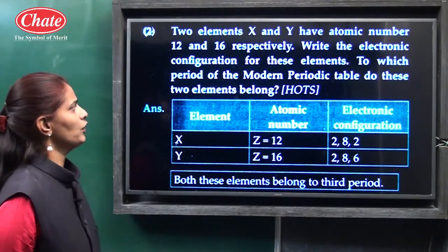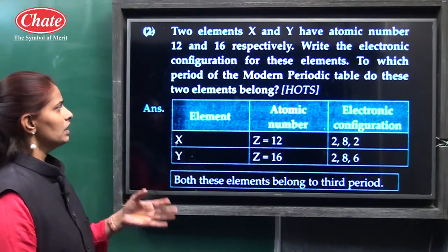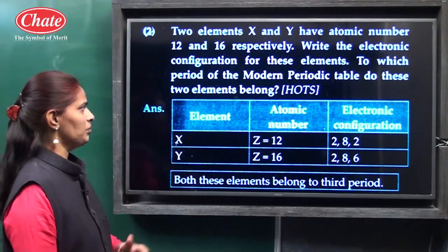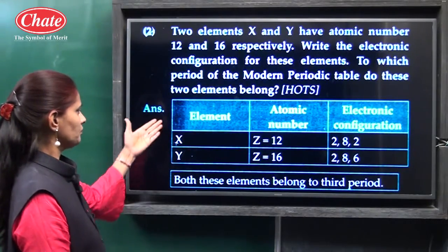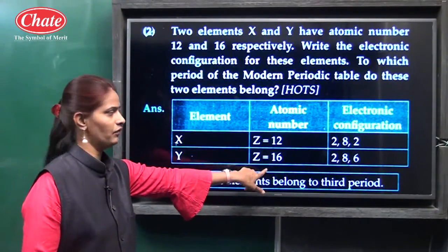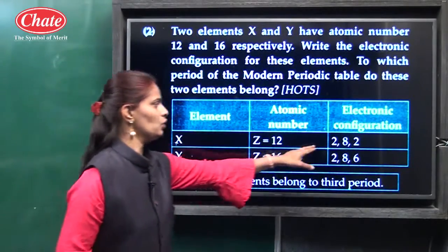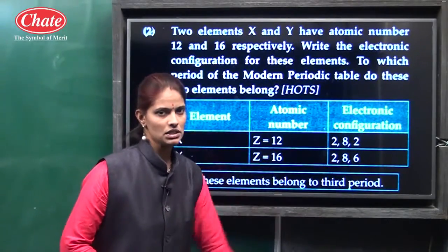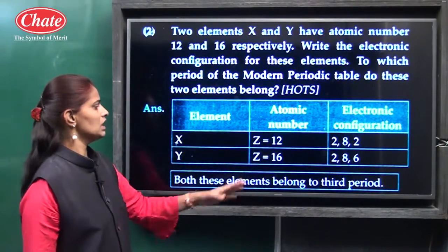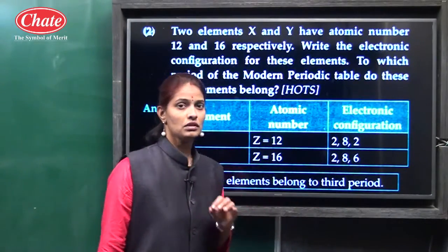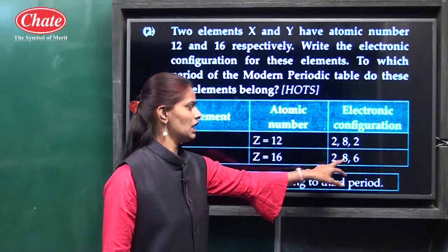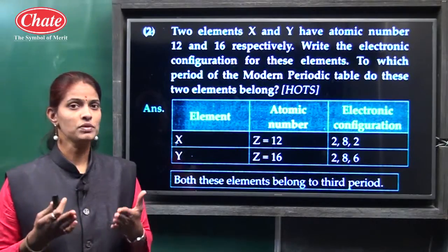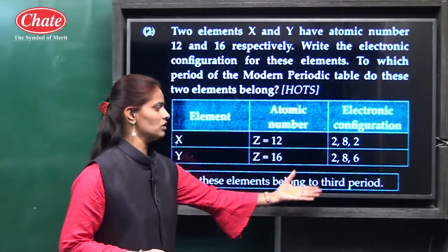Two elements X and Y have atomic numbers 12 and 16 respectively. Write the electronic configuration for these elements. Electronic configuration of X (atomic number 12): 2, 8, 2. Electronic configuration of Y (atomic number 16): 2, 8, 6. Both these elements belong to the third period because their electronic configuration shows three shells — K, L, and M shell — and the number of periods equals the number of shells.